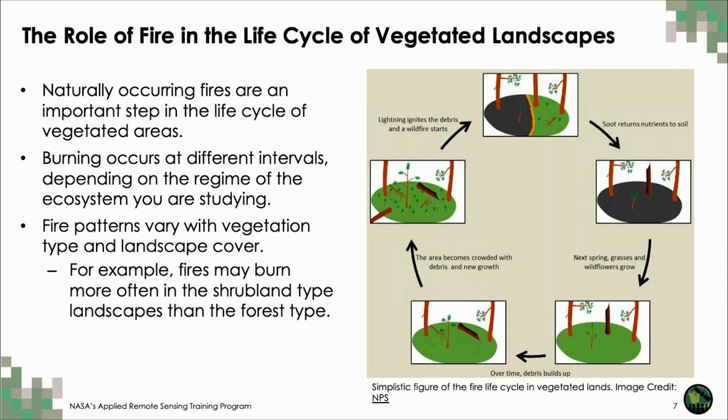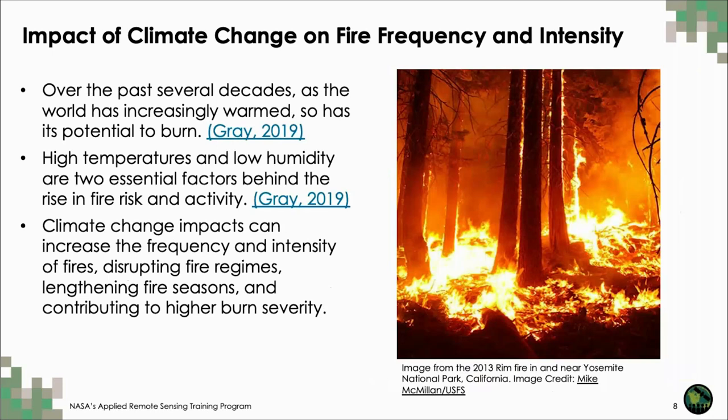This process of burning repeats itself after another ignition years later. This is a simplistic example of fire disturbance and its impact on the life cycle of vegetated areas. Burning within a landscape occurs at different intervals depending on the fire regime and vegetation types within the ecosystem. For example, fires may burn more often in shrubland-dominated ecosystems as opposed to forests.